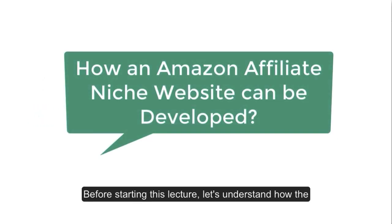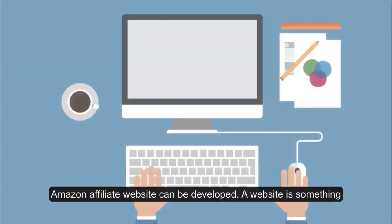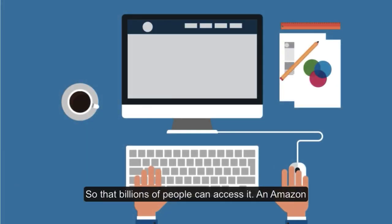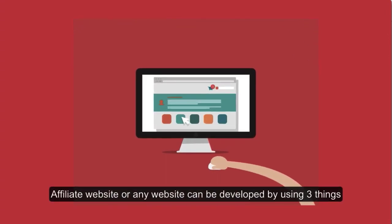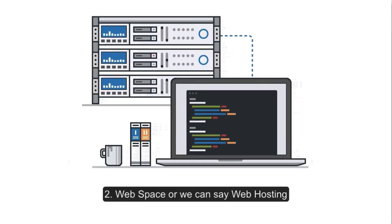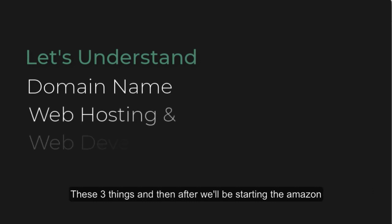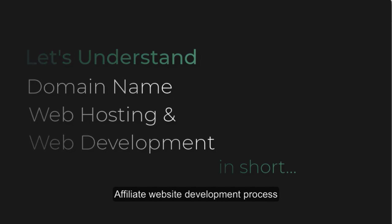Before starting this lecture, let's understand how the Amazon affiliate website can be developed. A website keeps all the information or products that you want to place on the internet so that billions of people can access it. An Amazon affiliate website or any website can be developed using three things: number one, domain name; number two, web space or web hosting; number three, web development process. Let me give you a short description about these three things, and then we'll start the Amazon affiliate website development process.